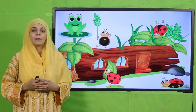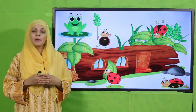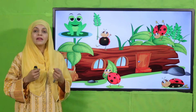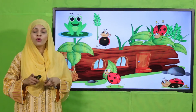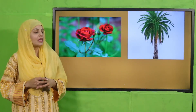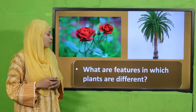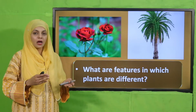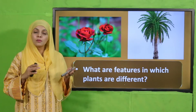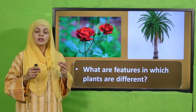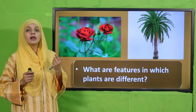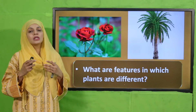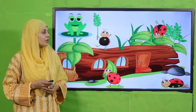My dear students, today we are discussing things around us for grade 8. But before that, let's quickly recap the previous lecture. Listen to the questions very carefully and then answer. For your help, the pictures are also there — watch them carefully and then answer. What are features in which plants are different? Some have flowers, some do not have flowers, some are small, some are tall, some have a thick hard woody stem, and some have a very small thin stem. These are differences in plants.